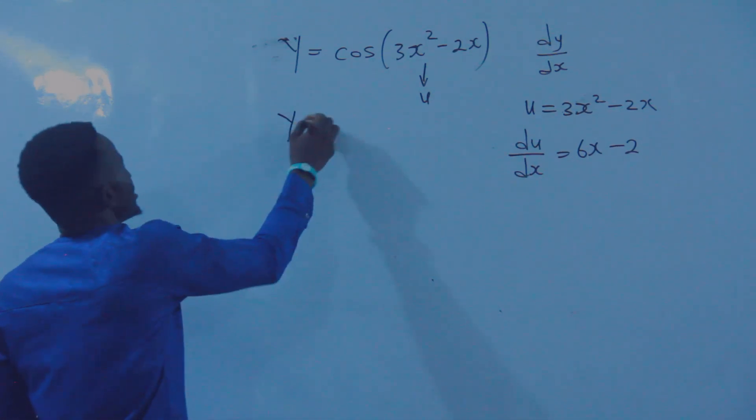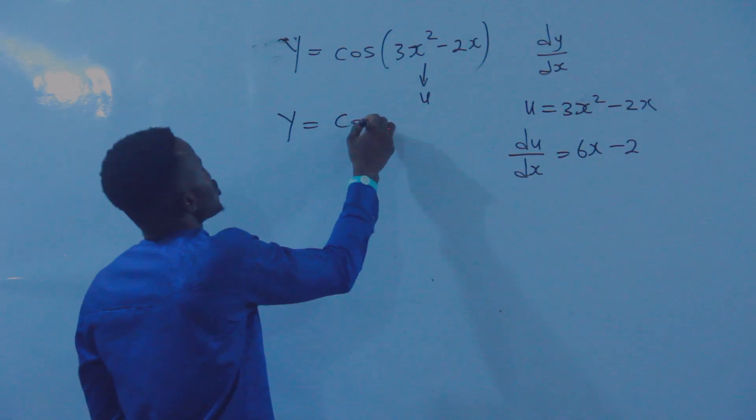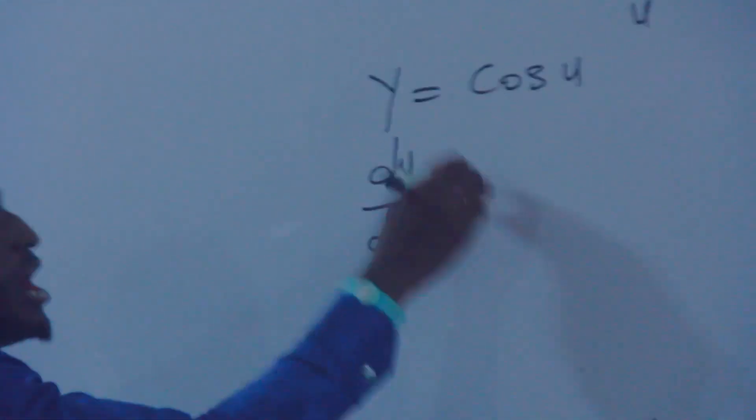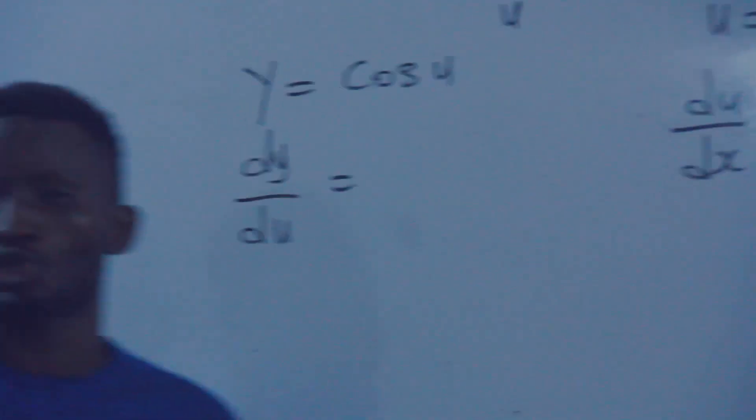Now let's come to this. I've already substituted this to be U, so the equation becomes Y equals cos U. I have Y equals cos U, which means I'll be having dY/dU. The differentiation of sine, don't forget, is cosine.